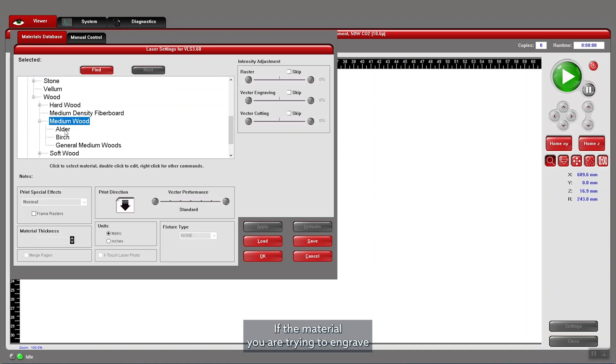If the material you are trying to engrave does not have preset settings, there is always room to experiment. You can do this with manual control on the top left, where you can tune the settings to your ideal needs.